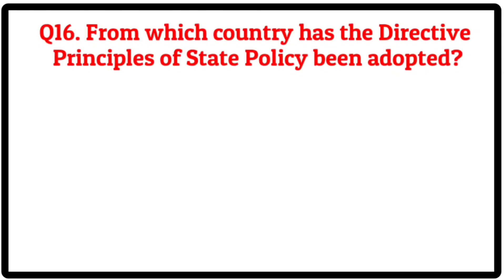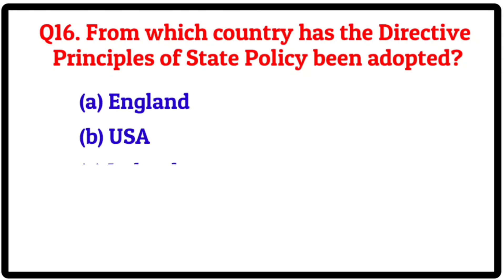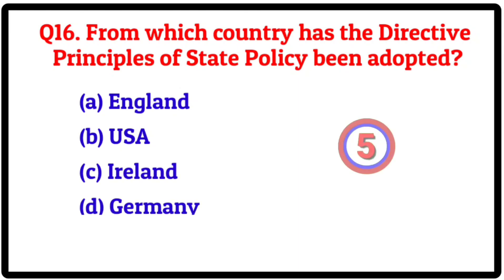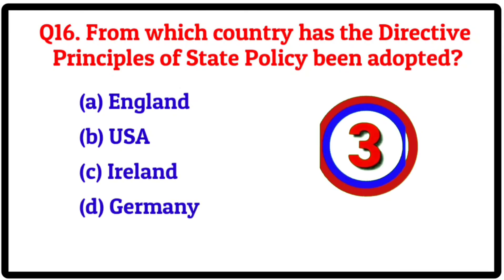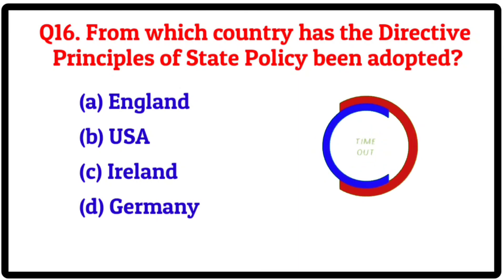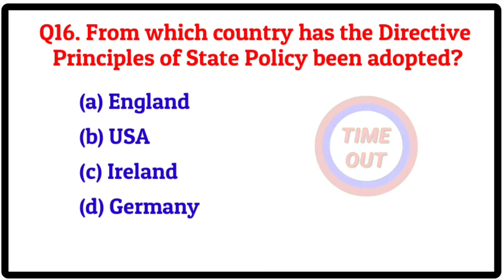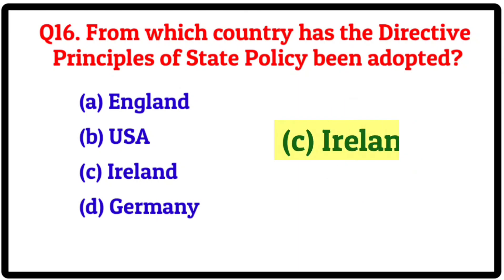Question 16. From which country has the directive principles of state policy been adopted? Option A: England. B: USA. C: Ireland. D: Germany. Correct answer is C: Ireland.